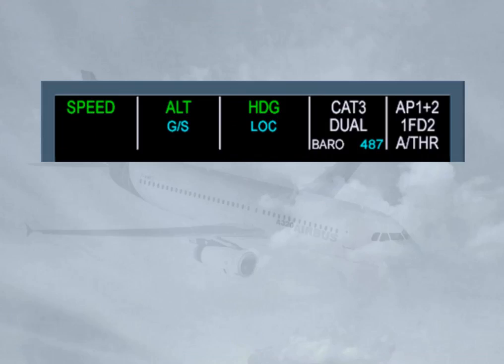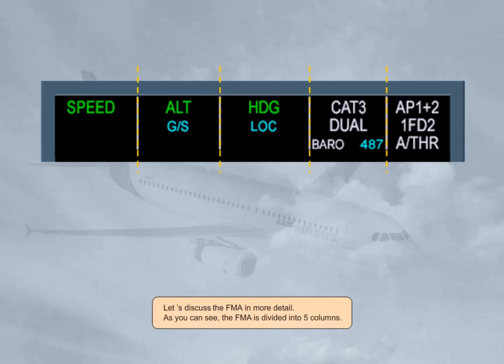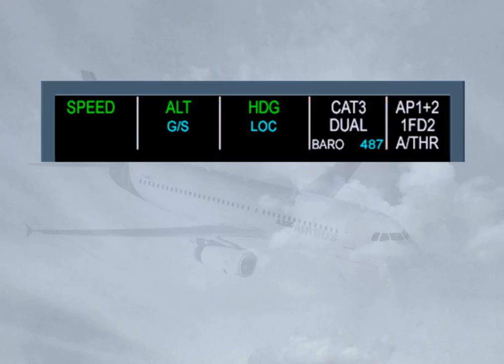Let's discuss the FMA in more detail. As you can see, the FMA is divided into five columns. The first column is dedicated to thrust — this is where the autothrust modes appear.